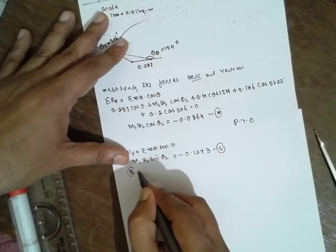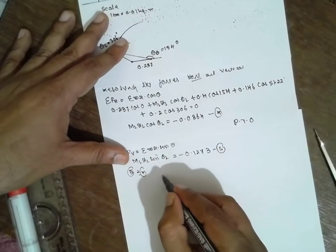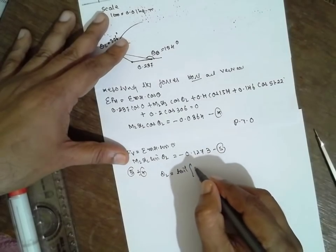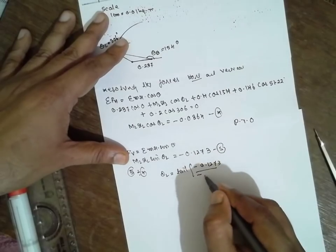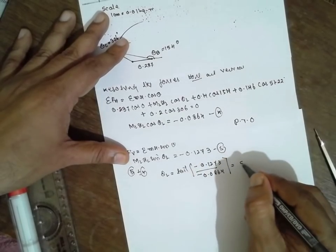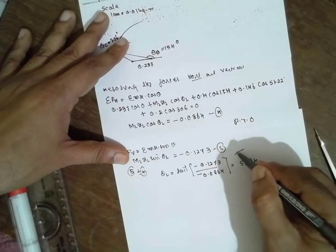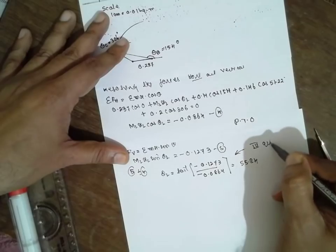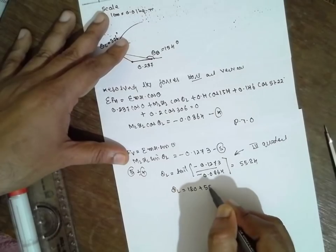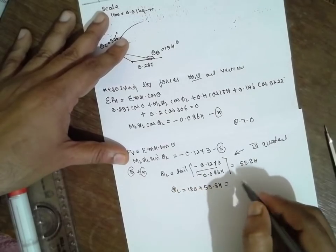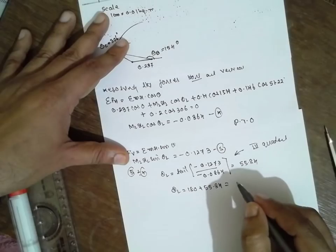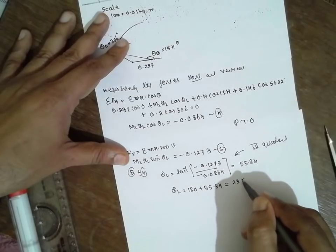Now divide 5 by 4. You will get theta L equals tan inverse of minus 0.1273 divided by minus 0.0864. The value will be 55.84 degrees. Because these are two minus signs, it lies in third quadrant. Therefore, theta L should be 180 plus this value. We will get the answer as 235.84 degrees.